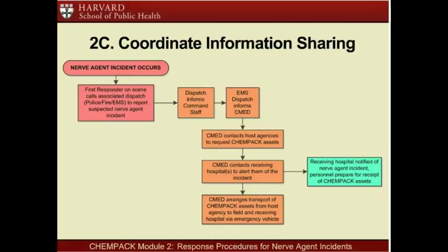Each regional CMED unit has information on the specific locations of the ChemPAC containers and detailed contact information for reaching people at these host facilities authorized to open the container and rapidly mobilize antidotes. CMED serves as the hub of information during a nerve agent event. Once incident command is established at the incident scene, the incident commander identifies an EMS liaison, who provides regular status updates to CMED regarding the incident. CMED also maintains contact with the ChemPAC host facility, receiving regular status updates on the ChemPAC deployment process, and relays this information back to the EMS liaison on the incident scene so field responders can prepare to receive ChemPAC assets.